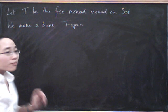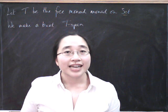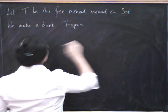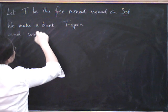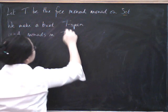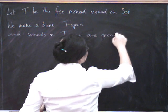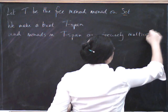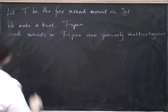And then remember how monads in the category of spans were small categories? Well, monads in the category of T-spans are going to be multi-categories. And this is the punchline. Monads in T-span are precisely multi-categories. So what's T-span?